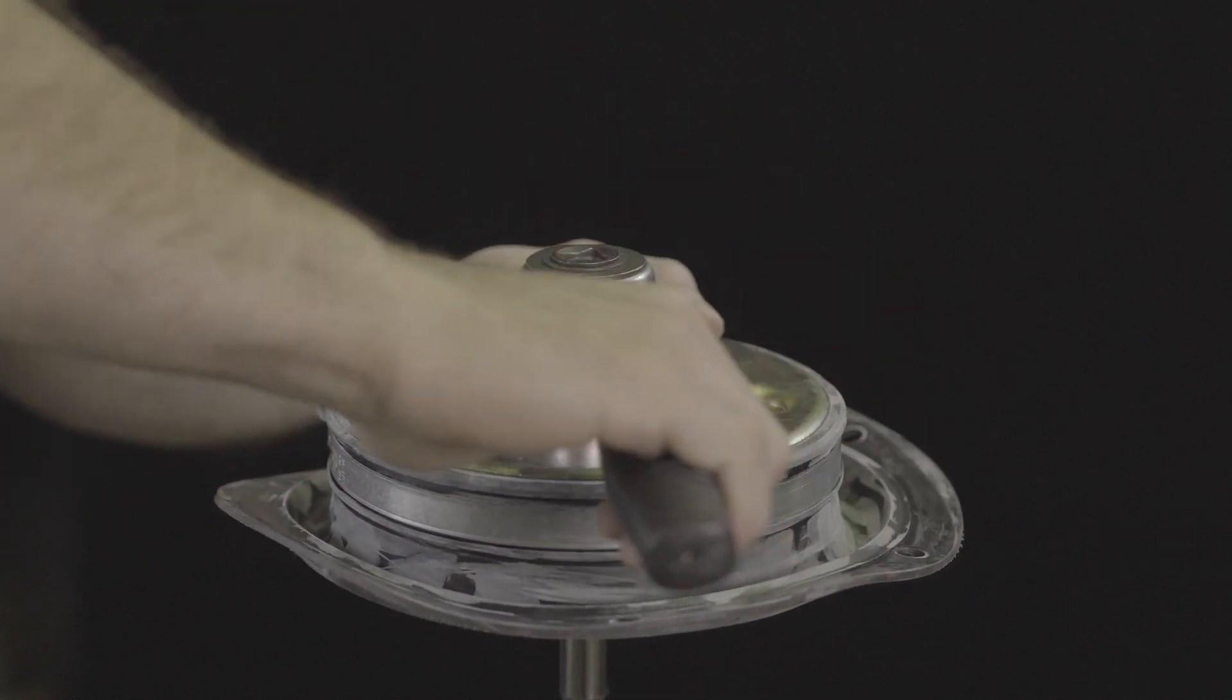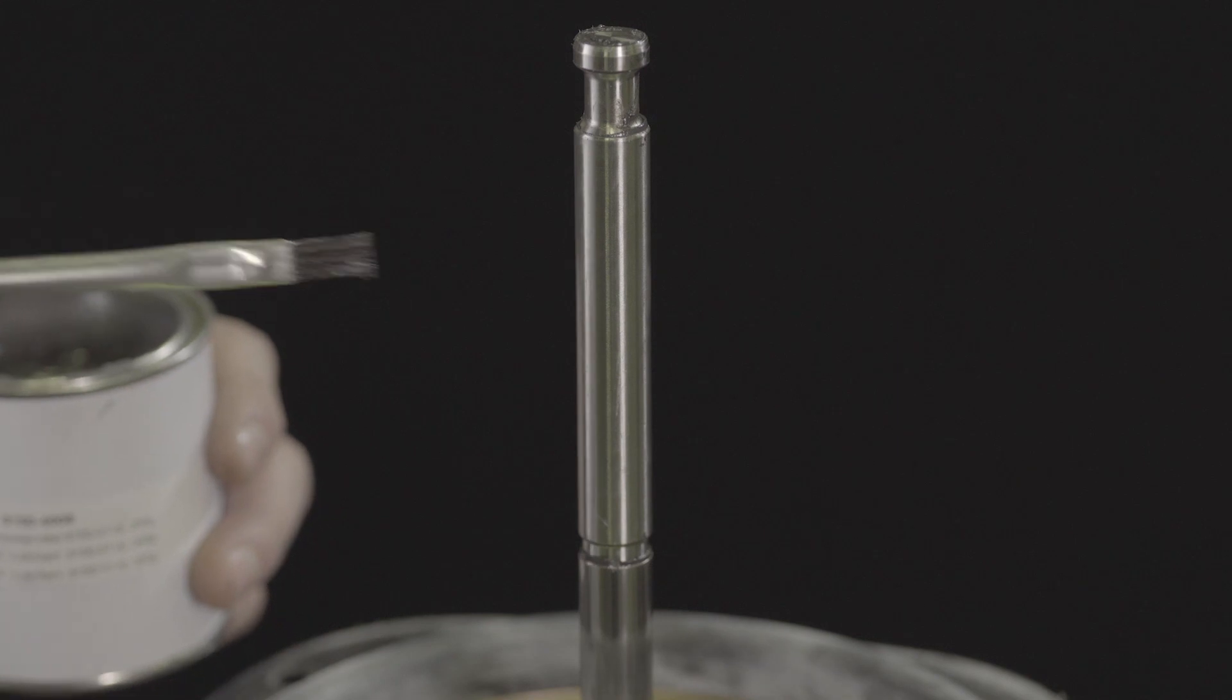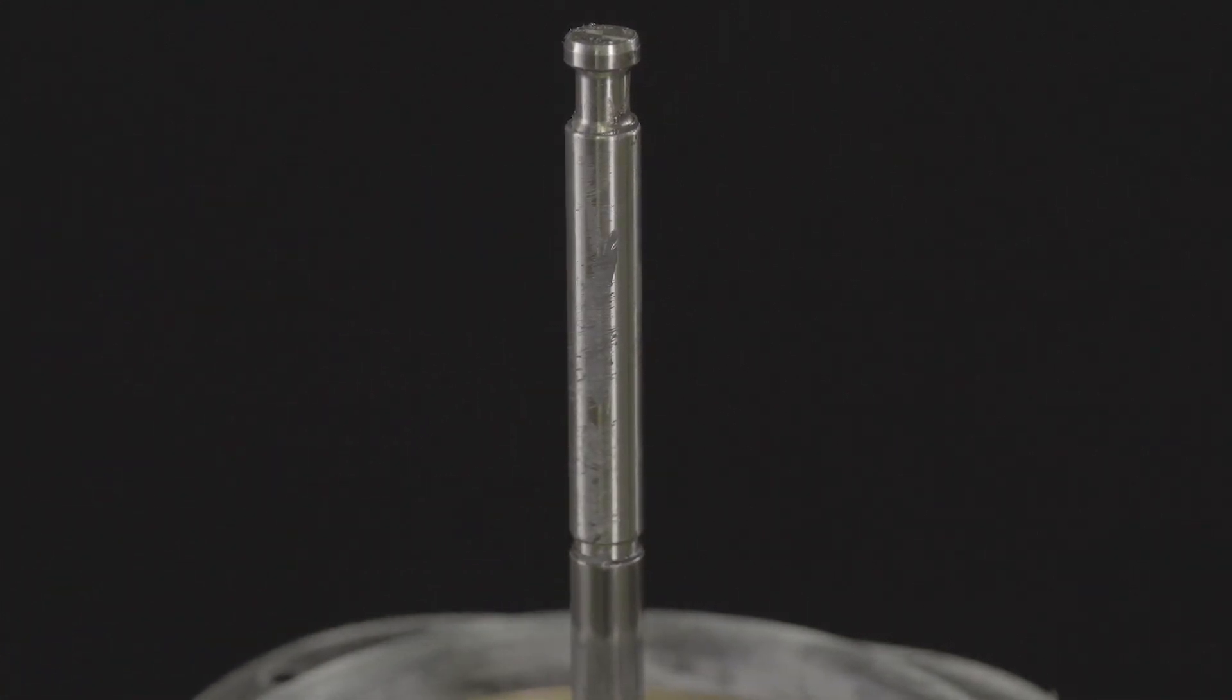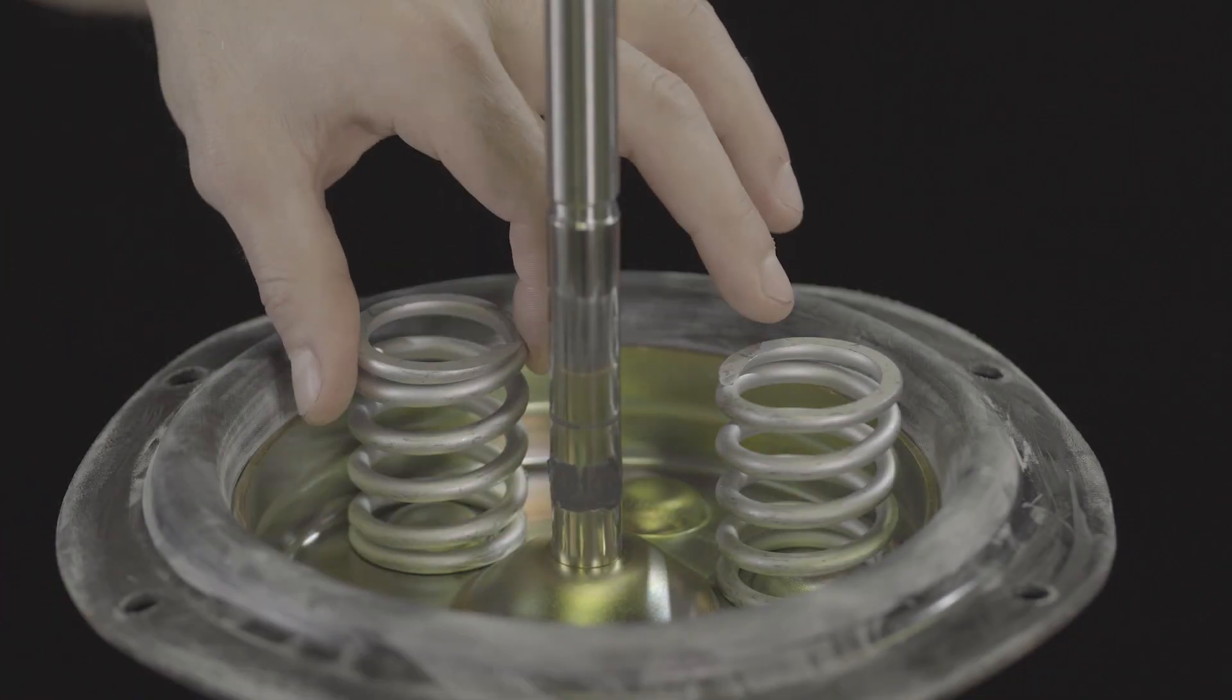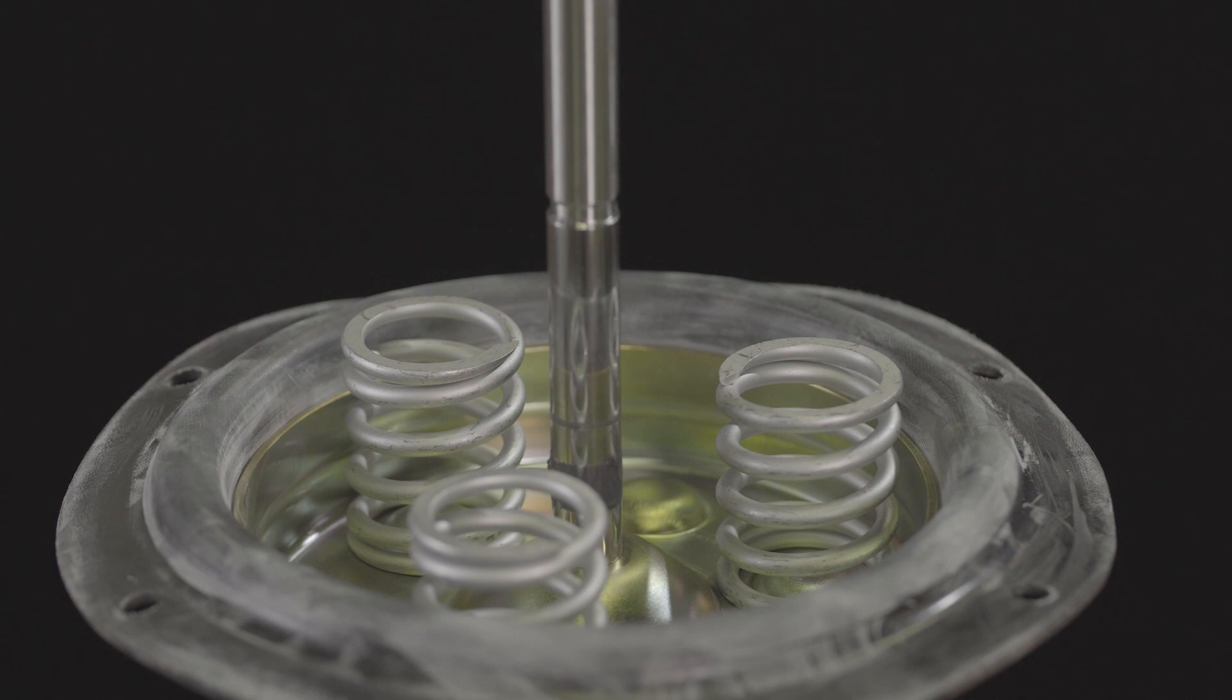Reinstall the collar nut. If necessary, apply a suitable lubricant to the actuator stem. Place the appropriate springs in the diaphragm plate, centering them in the intended recesses.